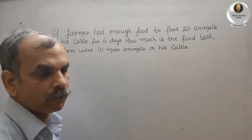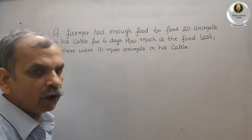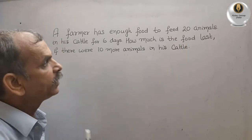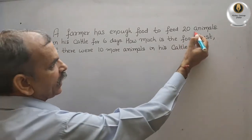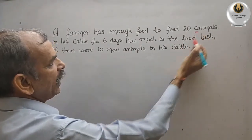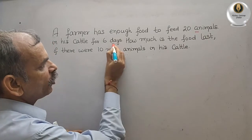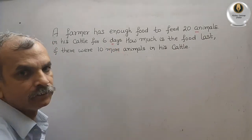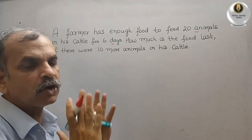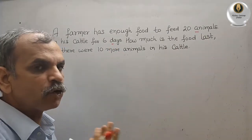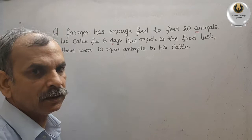Now we have two things. What are they? First is animals, and second is days. Food is the same — food is constant, your food does not change.